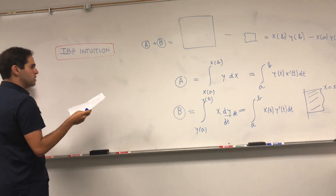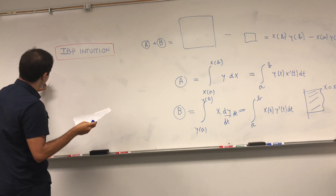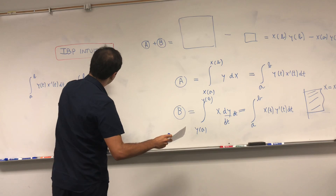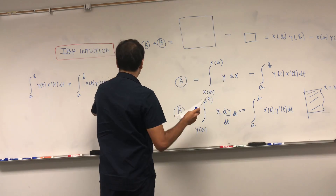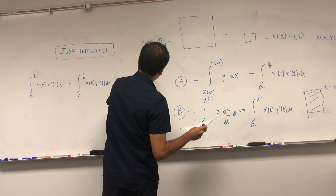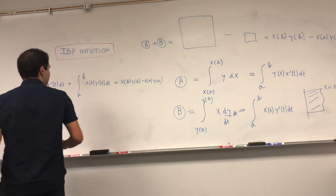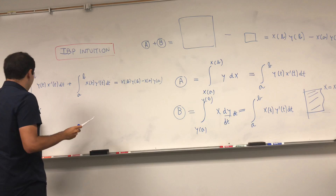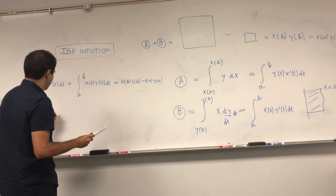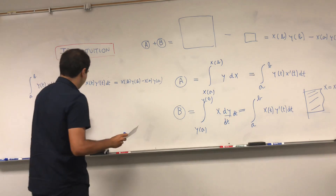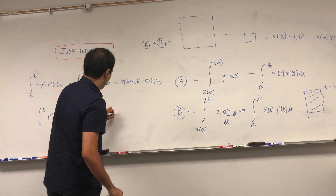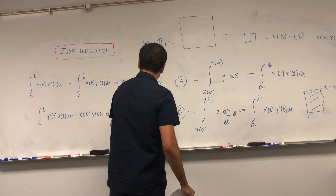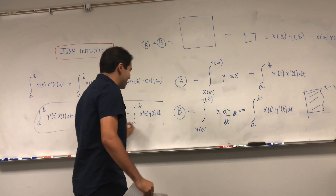So A plus B is: the integral from a to b of y of t times x prime of t dt, plus the integral from a to b of x of t times y prime of t dt, equals x of b times y of b minus x of a times y of a. Solving for one term gives: the integral from a to b of x of t times y prime of t dt equals x of b times y of b minus x of a times y of a minus the integral from a to b of x prime of t times y of t dt. This is just integration by parts.